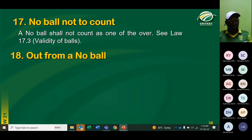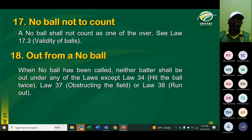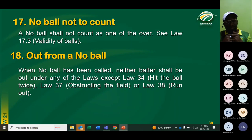Once no ball is called, the ball does not become dead. The penalty for no ball is one run. No balls do not count as one of the six valid balls for the over. There are three ways a batter can be dismissed off a no ball: hit the ball twice, obstructing the field, and run out — these are the only three modes of dismissal allowed from a no ball.